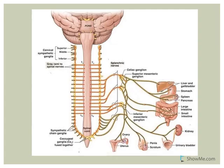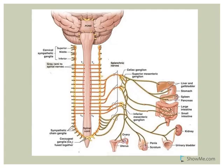We have three different types of collateral ganglia. The first is referred to as the celiac ganglion. The celiac ganglion targets structures in the upper abdominal cavity: the stomach, the liver and gallbladder, and the pancreas and spleen.